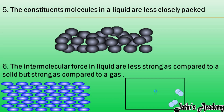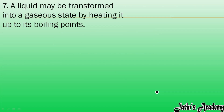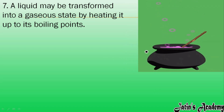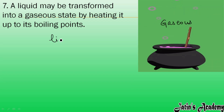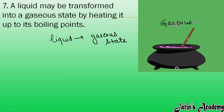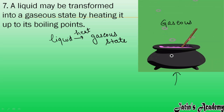The next characteristic is that a liquid may be transformed into a gaseous state by heating it up. For example, when I heat water in this jar, the liquid is converting into vapors — into a gaseous state. So liquids can convert into gaseous state by heating, and the fixed temperature at which a liquid converts into a gaseous state is known as its boiling point.